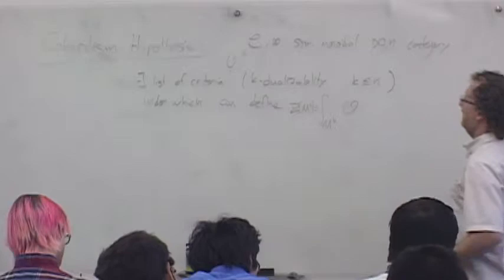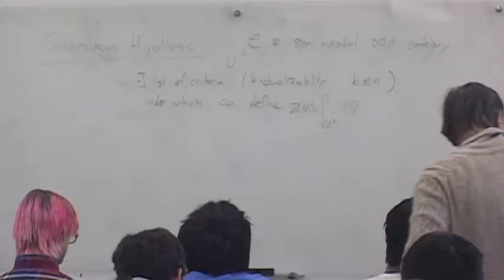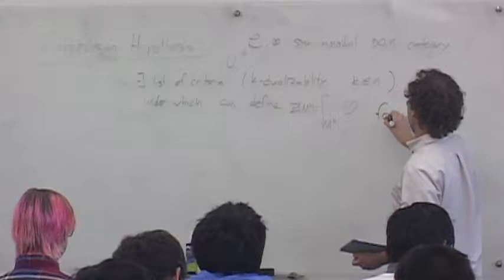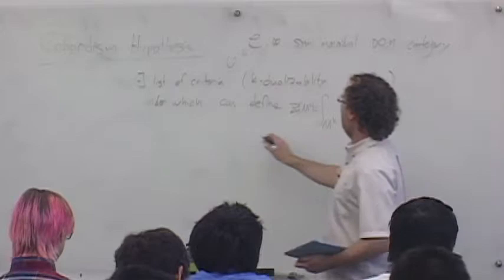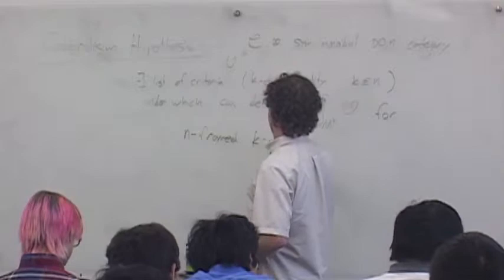There are conditions on the object O to be sufficiently finite. If it's k-finite for some number k less than n, that means we can define this invariant — we can define a topological field theory defined up to k-manifolds. So this is an invariant for n-framed k-manifolds. These are k-manifolds, but we're treating them as n-dimensional framed manifolds.